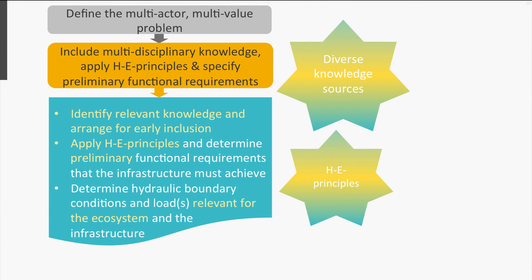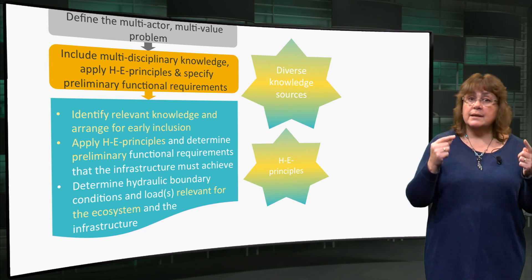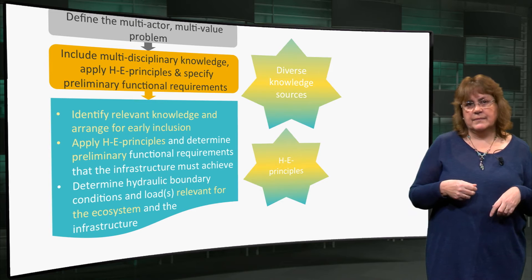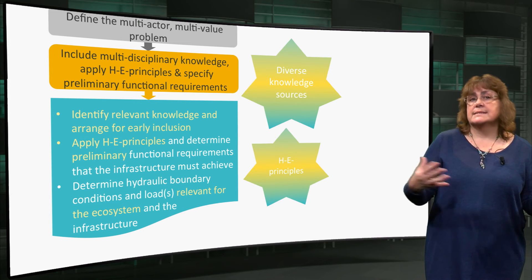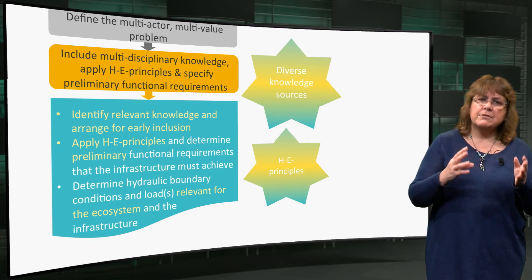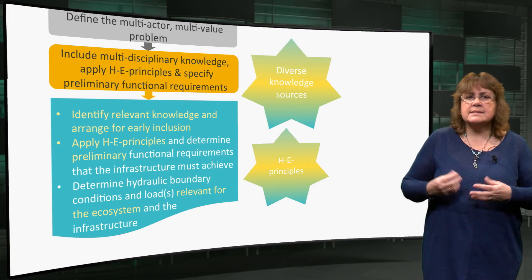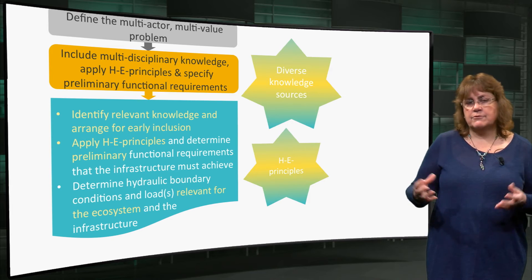Step 2: Including multi-disciplinary knowledge, applying the HE principles and specifying preliminary functional requirements. Here, diverse types of knowledge from ecology to engineering play a role. The environment is described in terms of form and functioning and the character in terms of the HE principles. Preliminary functional requirements are specified, so are the boundary conditions and the loads. But the first two steps in the building with nature design process are very different to those of the conventional approach, because of their wide scope and their explicitly open stance to other and diverse knowledge sources.